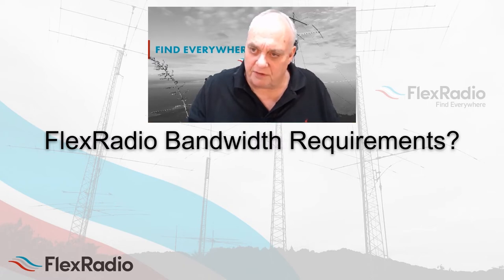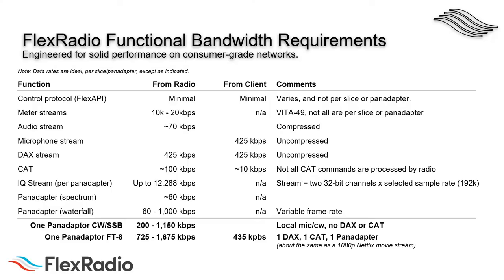One of the most common questions we get is how much network bandwidth is required for our transceivers. Here is a list of current functional bandwidth requirements for the various streams used by FlexRadio System transceivers. Our products are engineered for solid performance on consumer-grade networks, so you don't need anything special. The data rates listed are ideal — they don't account for network layer protocol overhead and are per slice or pan adapter, so you're likely to see more. The Flex API control protocol bandwidth requirements are minimal and hardly worth mentioning.